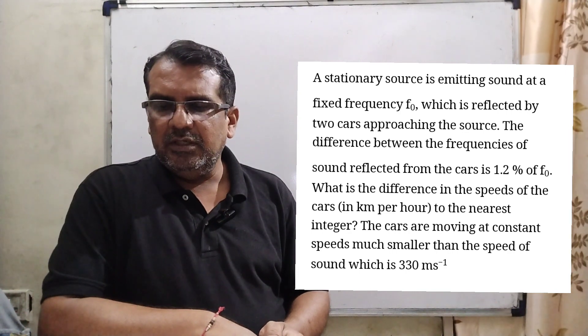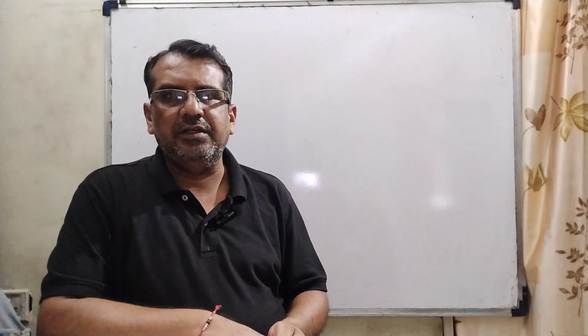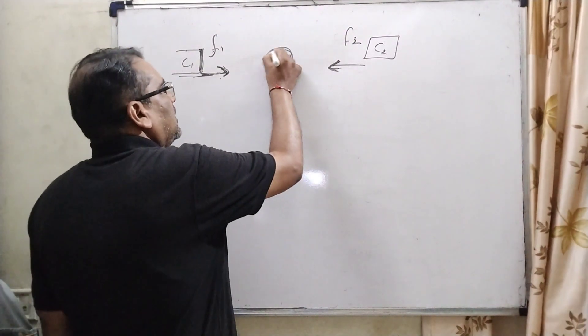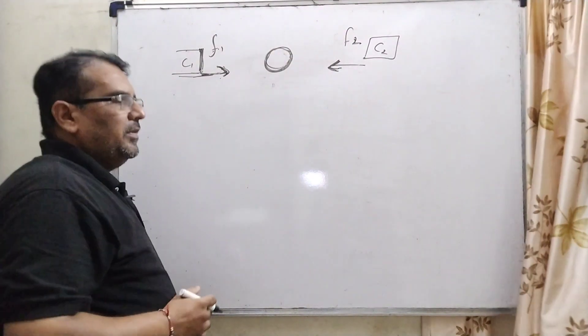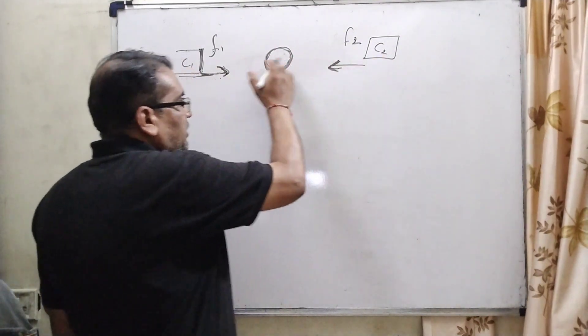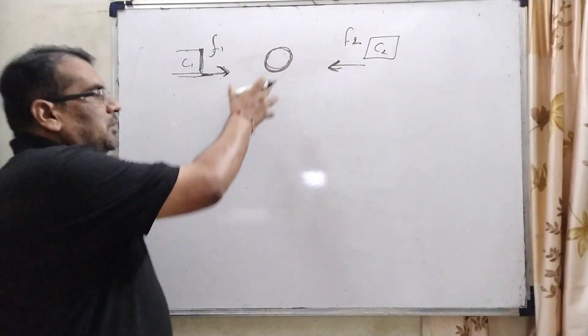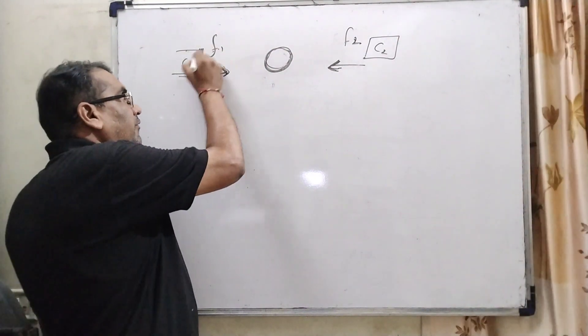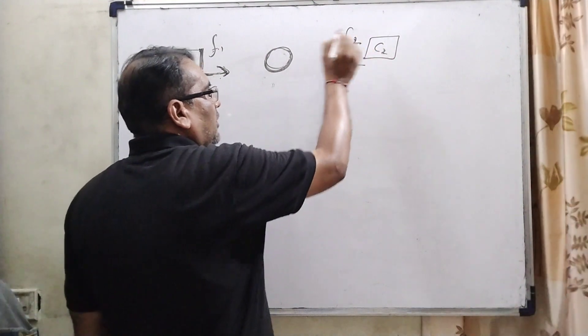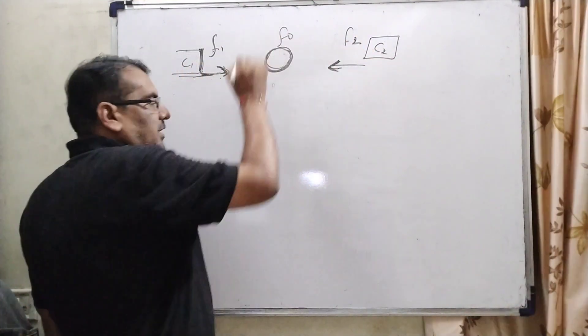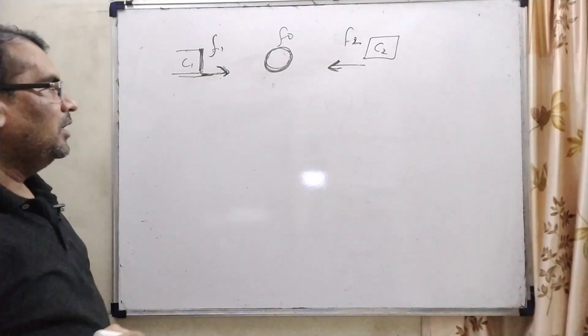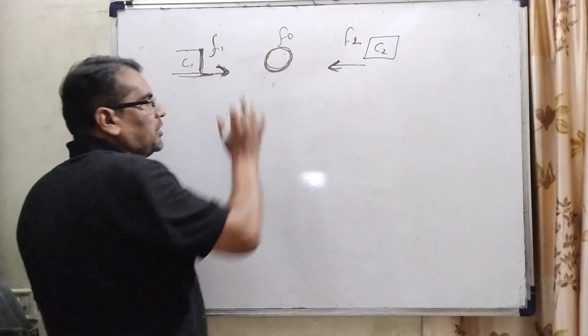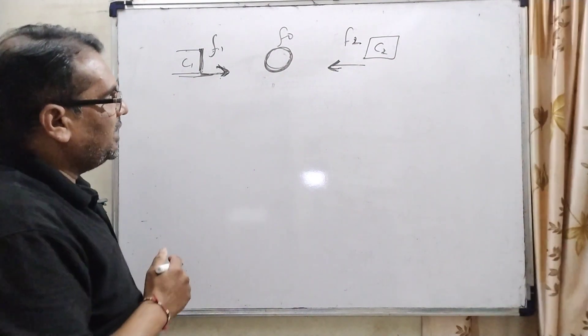And this question is asked IIT JEE 2010. Now as per the question, here the sound source is stationary and two cars C1 and C2 approach towards the sound source. So therefore its apparent frequency is F1 for the C1 car and apparent frequency F2 for C2, and fixed frequency we can consider F0. Here we can see that C1 car approaches towards the stationary sound source.